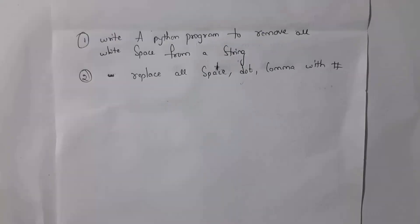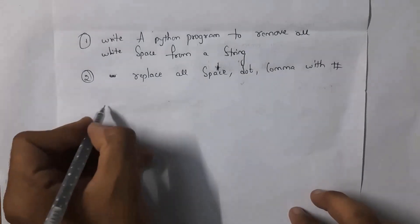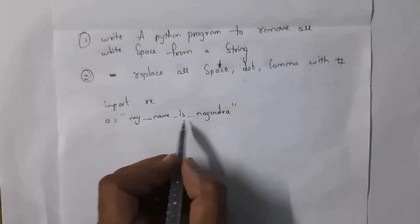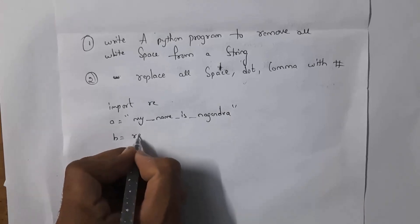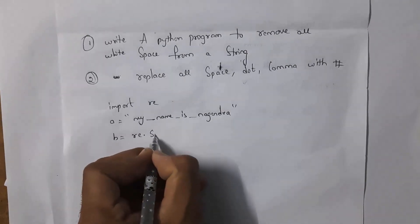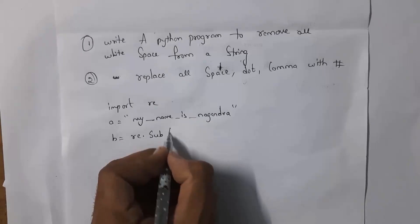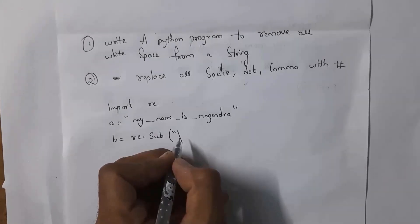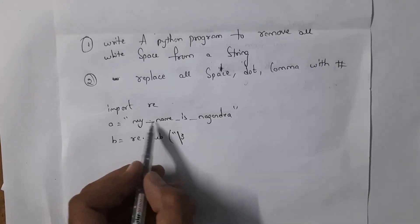This is the first question: write a Python program to remove all white spaces from a string. For example, write 'import re' and set a equal to 'my name is nagendra'. Now I want to remove all the spaces from the given sentence. Write b equal to re.sub — that is substitute. In order to remove spaces, we use the sub function. Inside sub, write backslash s to match spaces.